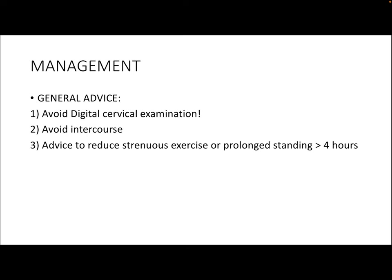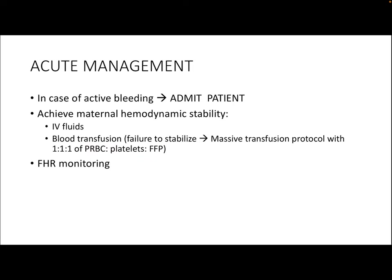For management of placenta previa, the general advice is to avoid digital cervical examination, avoid intercourse, and avoid strenuous exercise or prolonged standing for more than 4 hours. In acute management, if a patient comes with active bleeding, admit her and first achieve maternal hemodynamic stability by giving IV crystalloids and blood transfusion. If blood transfusion fails to stabilize the mother, go for the massive transfusion protocol (MTP) with a 1:1:1 ratio of packed red blood cells to platelets to fresh frozen plasma. Also perform fetal heart rate monitoring to ensure fetal status is reassuring.